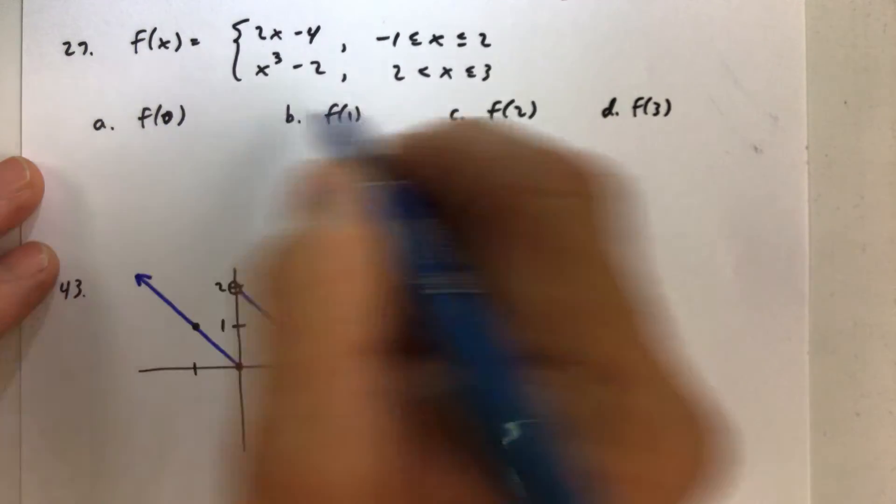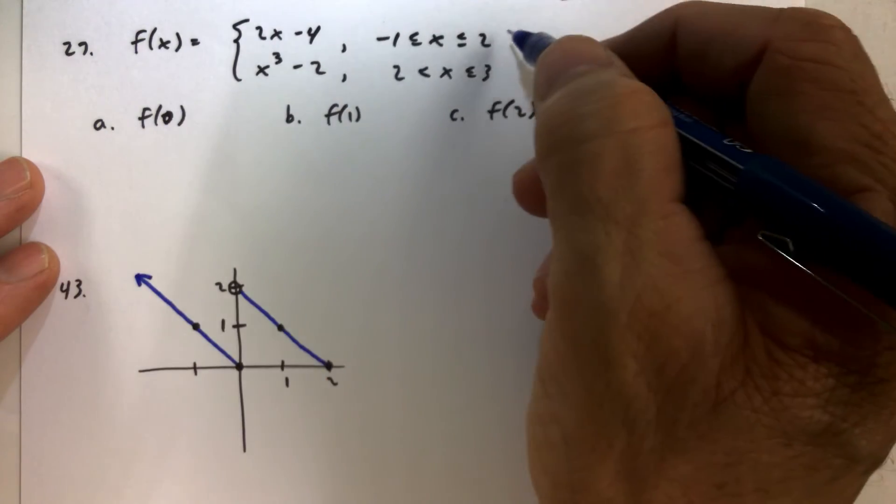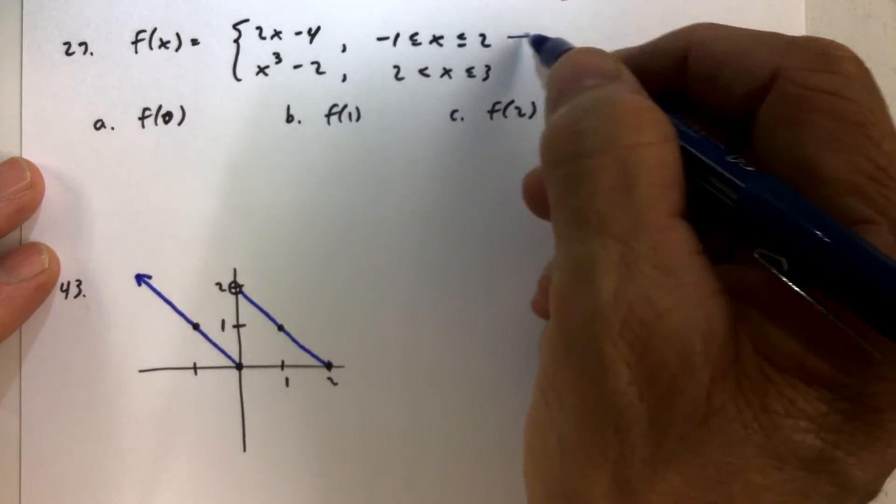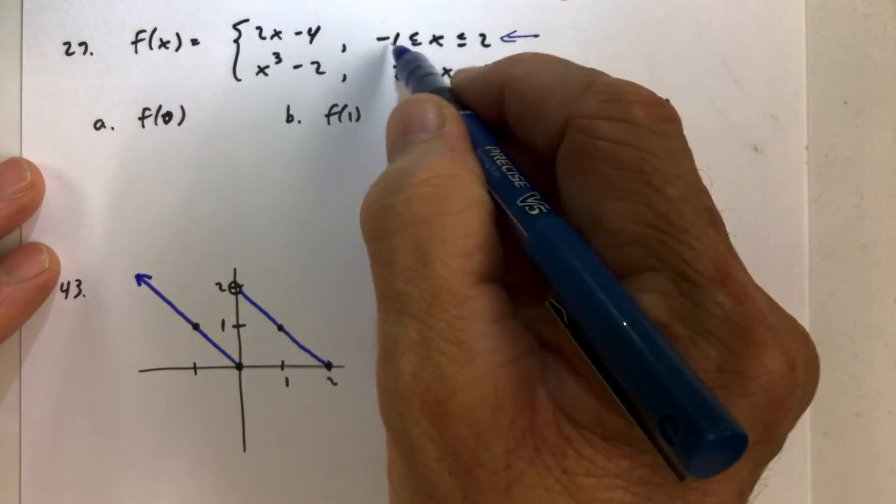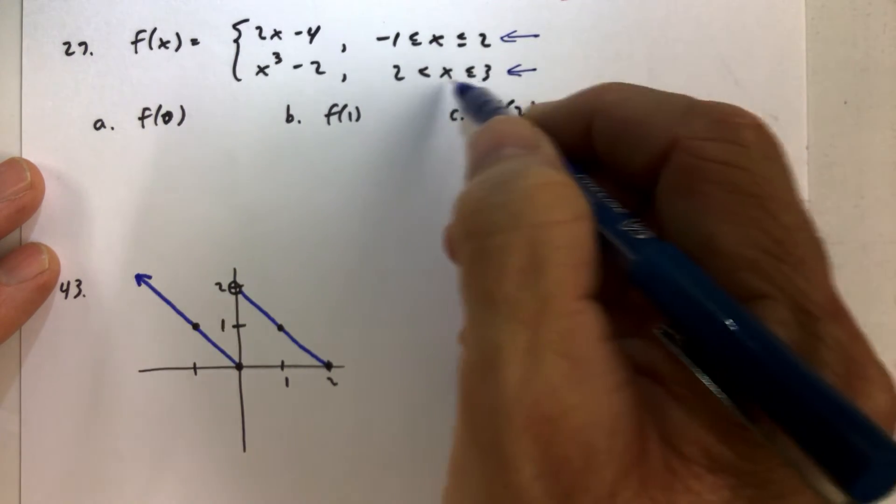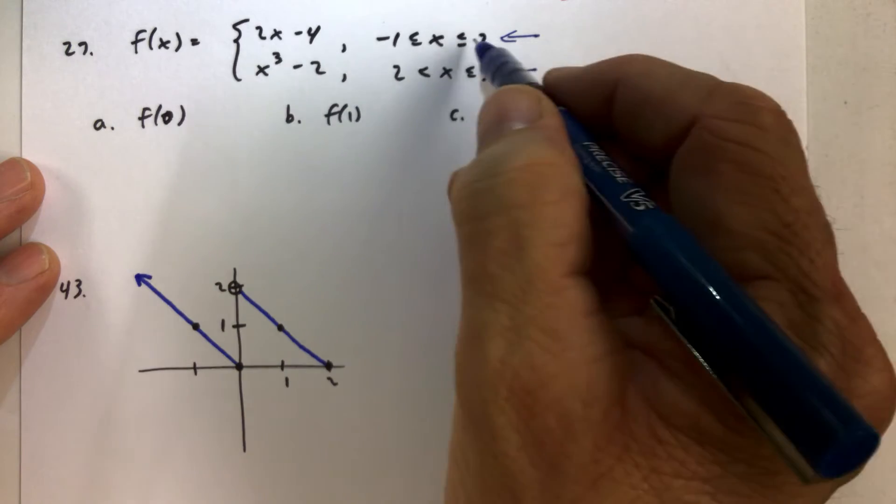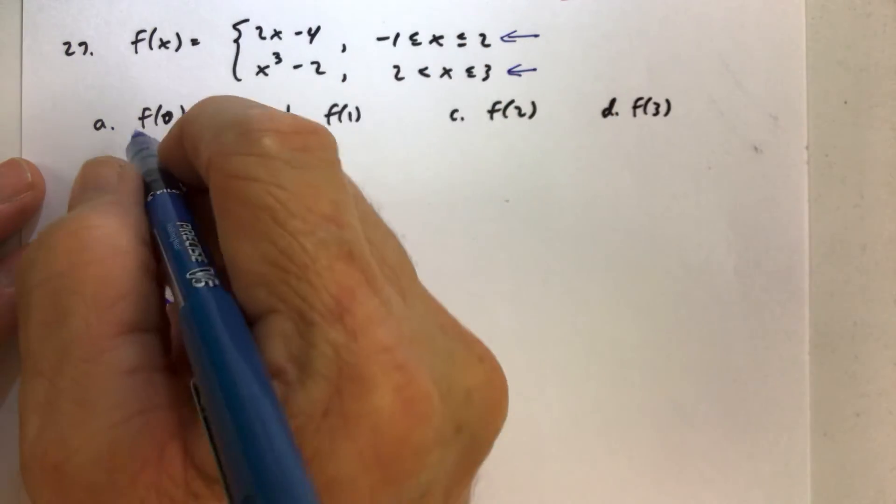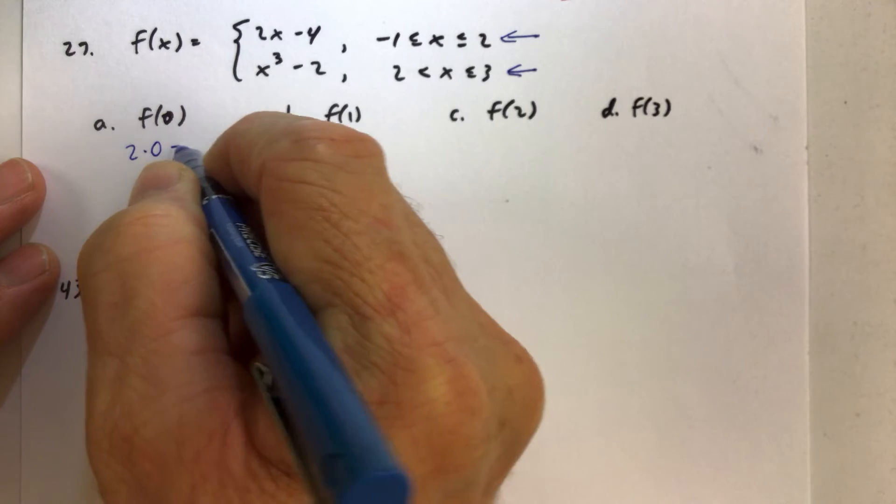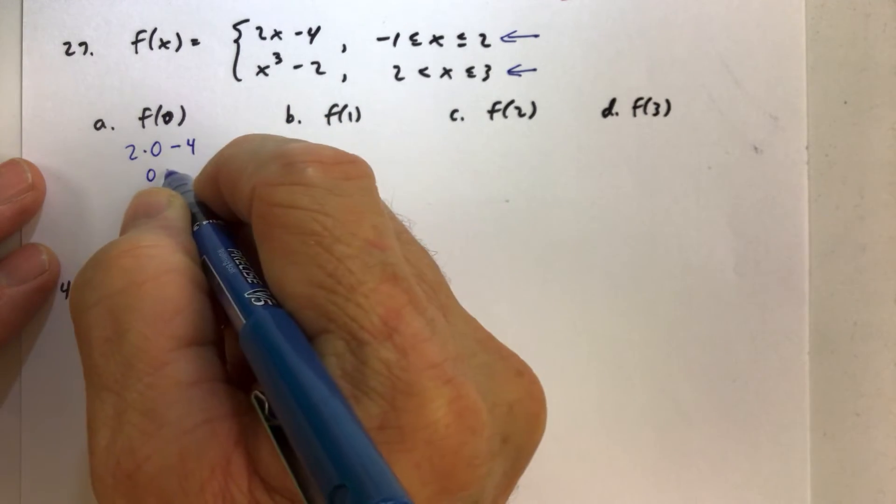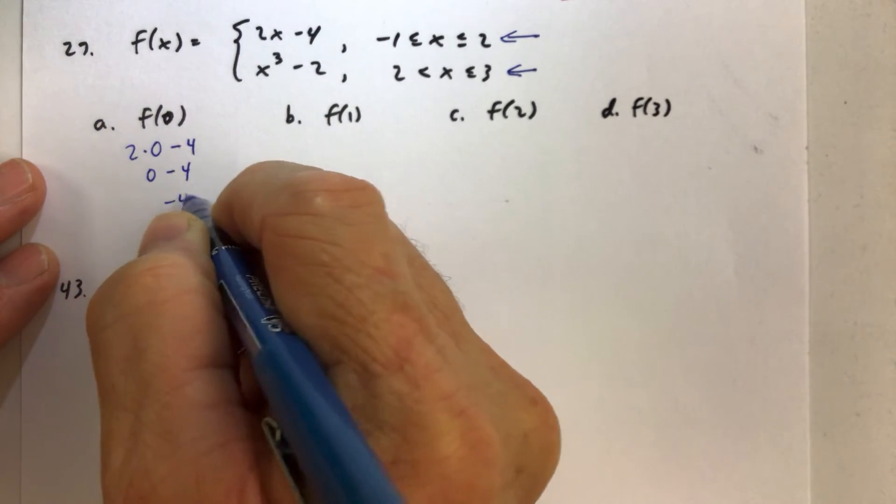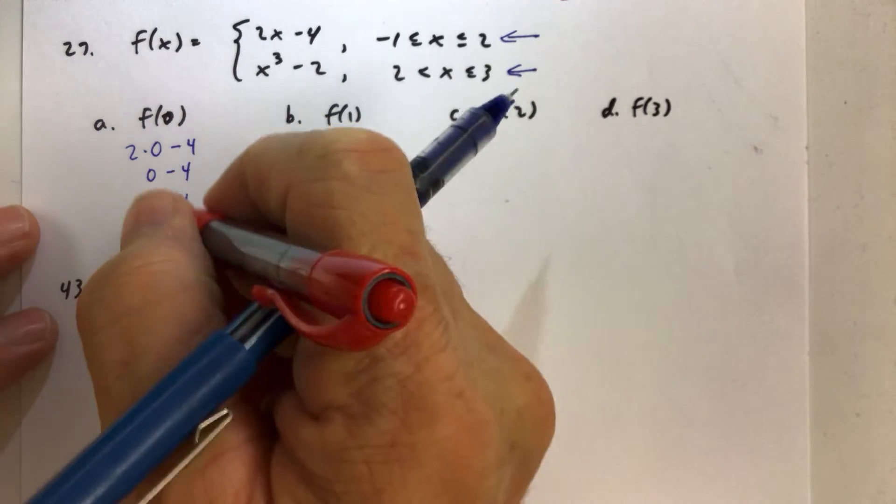f of 0. Now we have to figure out, well, which piece are we going to use? Is 0 in between negative 1 and 2, or is 0 in between 2 and 3? Well, we know 0 is in between negative 1 and 2, so we're going to use the first piece. We replace x with 0. We get 2 times 0, which is 0, minus 4, which is negative 4. All right.